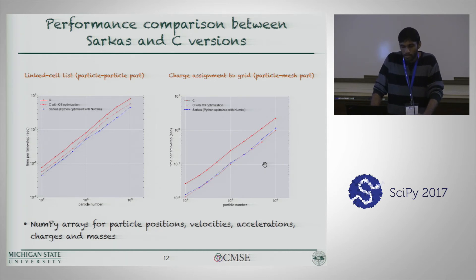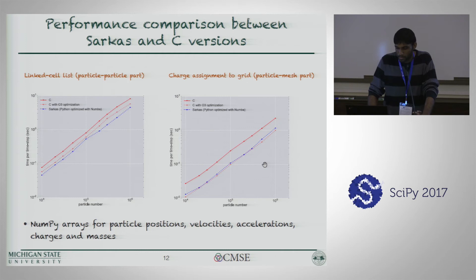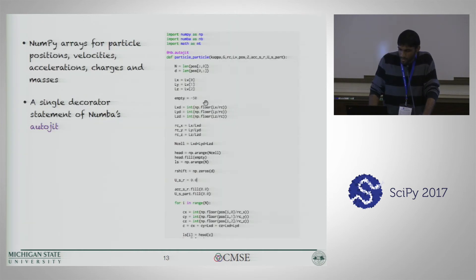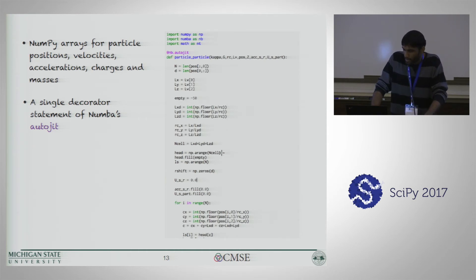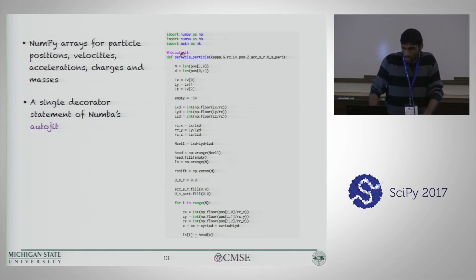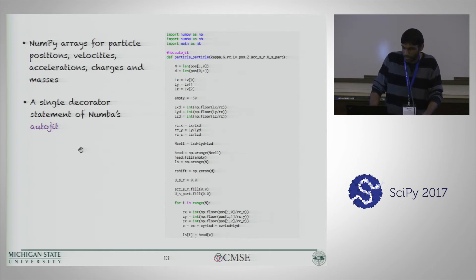I didn't do any magic to get this — I just used NumPy arrays wherever possible. In this case, that was particle positions, velocities, accelerations, charges, and masses: all the quantities needed for the kind of MD I'm interested in. This is just a snapshot of the starting part of the link cell list routine. As you can see, it's simple Python code with just one decorator statement on top from Numba — that's auto JIT, which is the older version of Numba. Now it's just JIT.